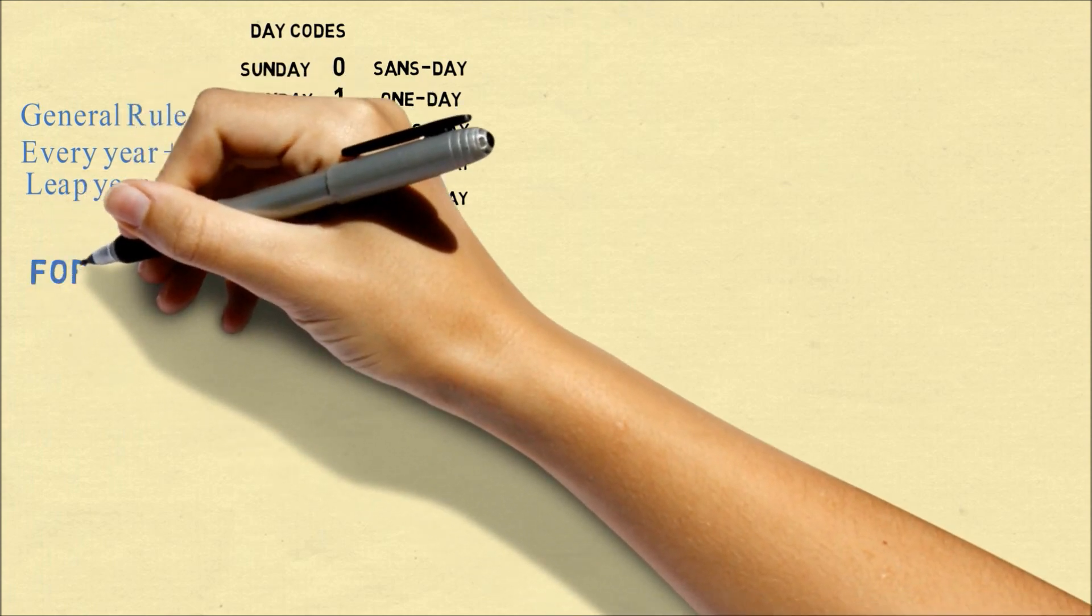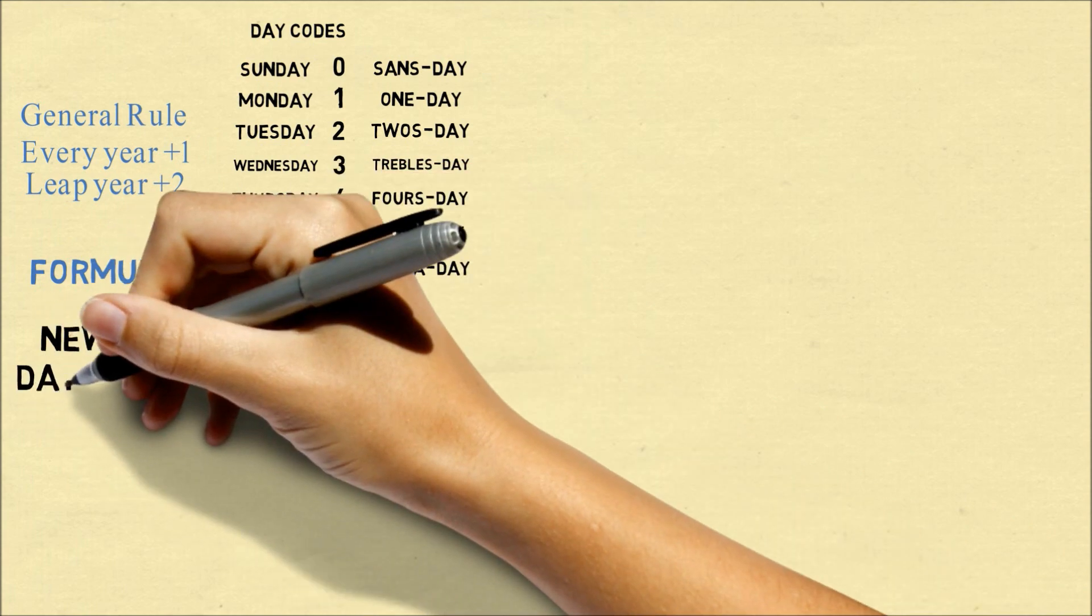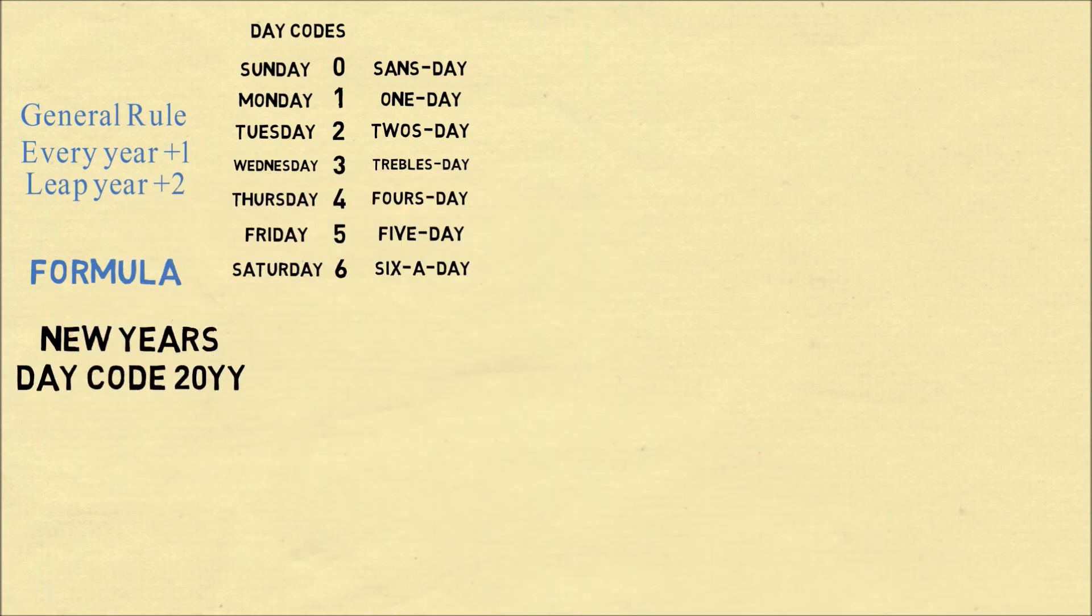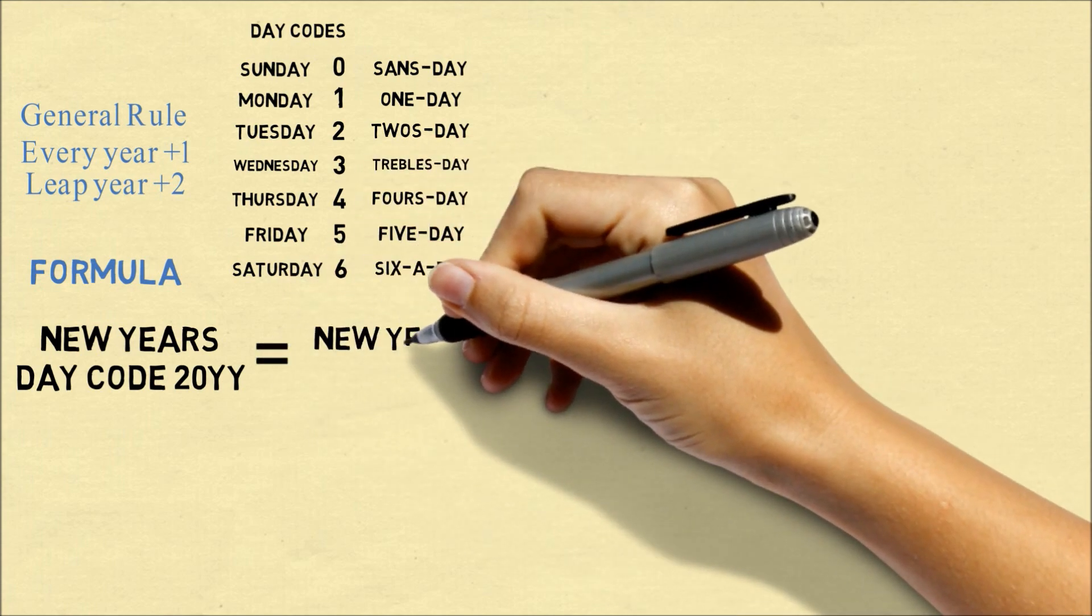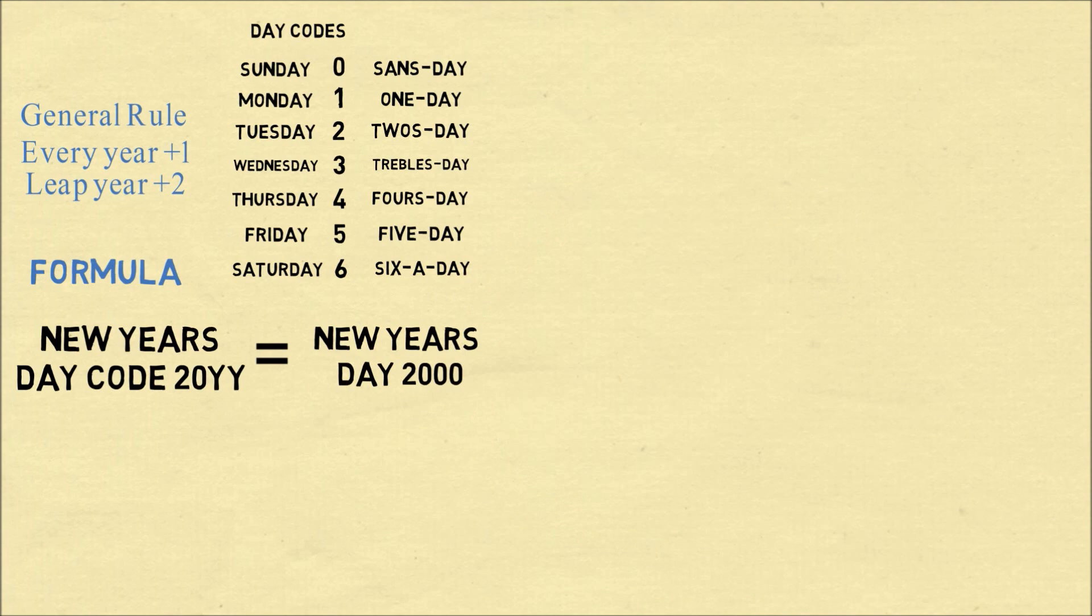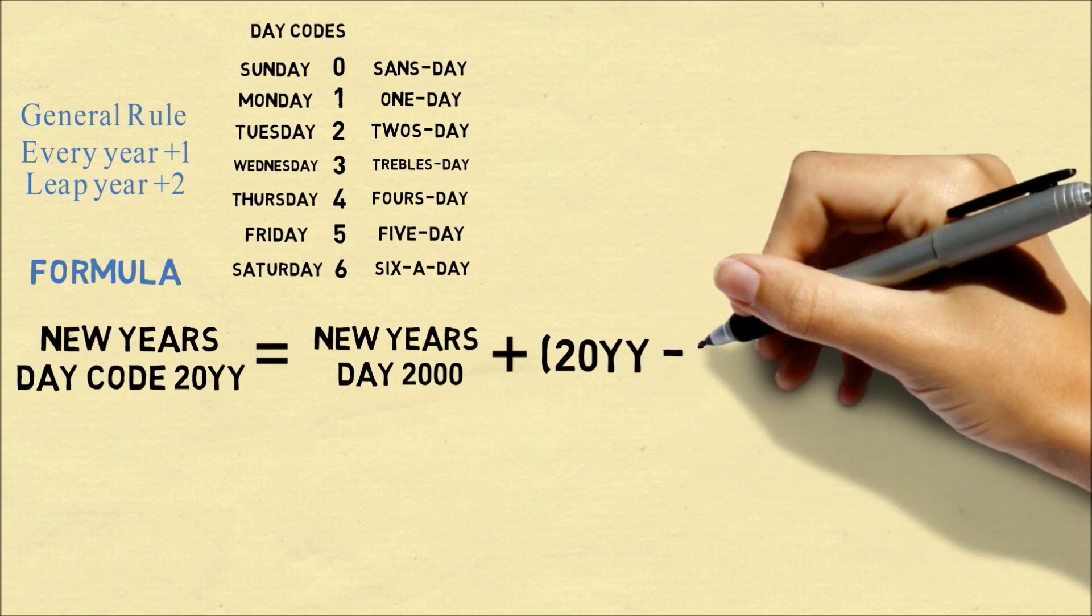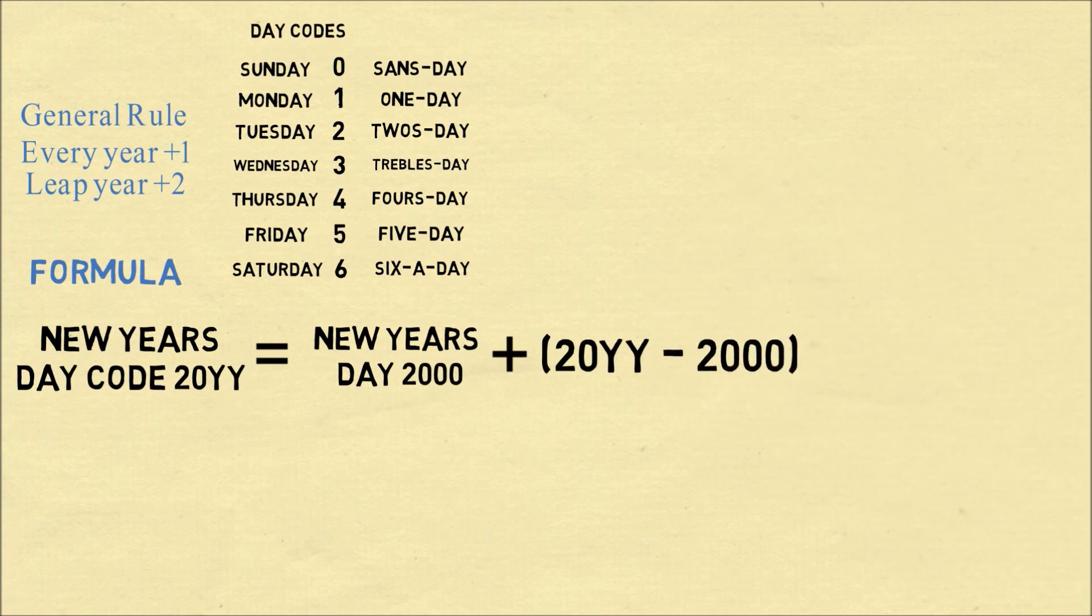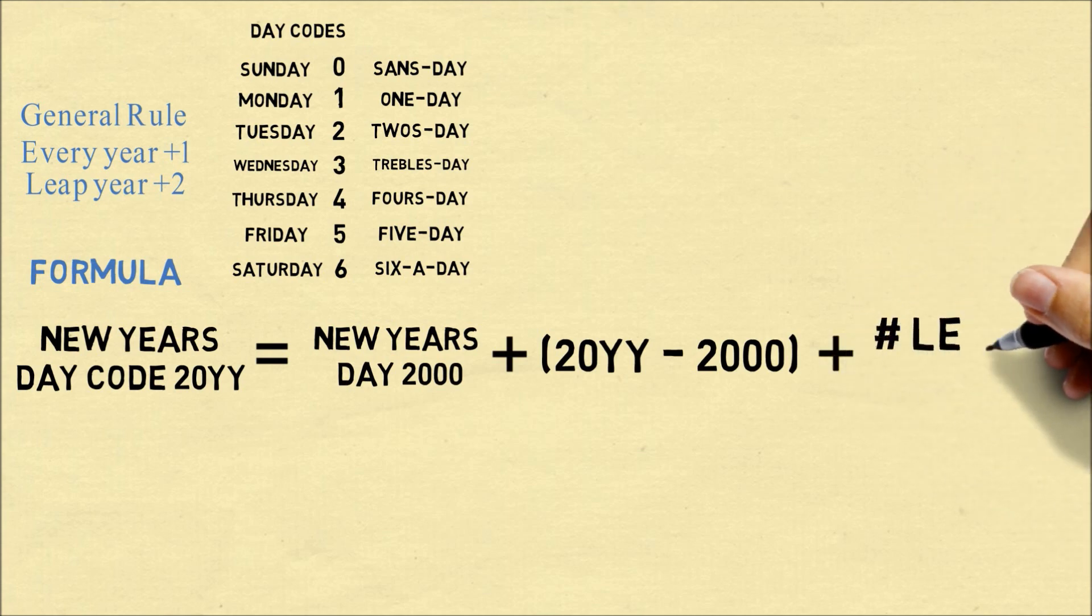So now let's try and come up with a numerical formula to come up with the day that the New Year starts, given the year 20YY. So we know we want to start out with the New Year, the day that it started in 2000, plus we're going to add one day for every additional year beyond the year 2000. So that's 20YY minus 2000. We also want to add in an extra day for the number of leap years.